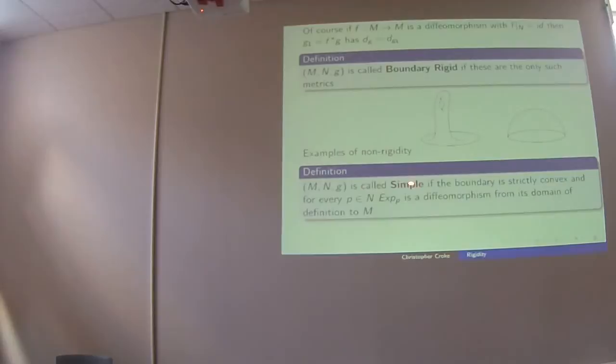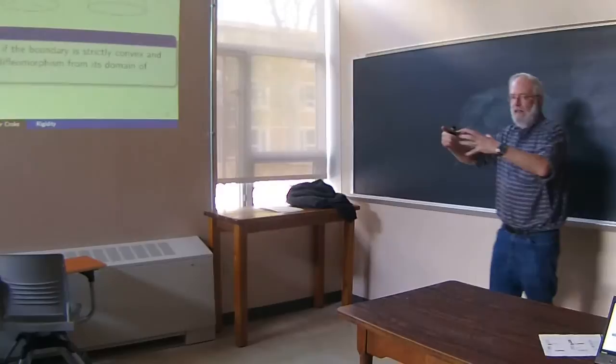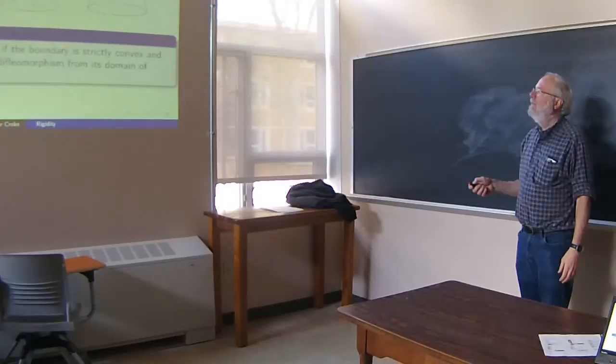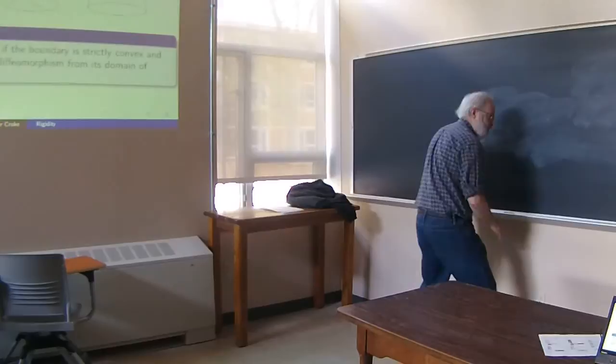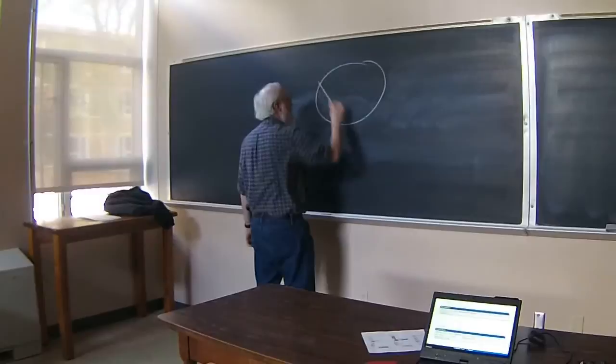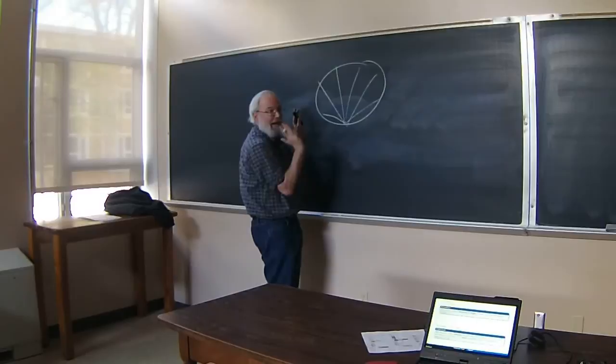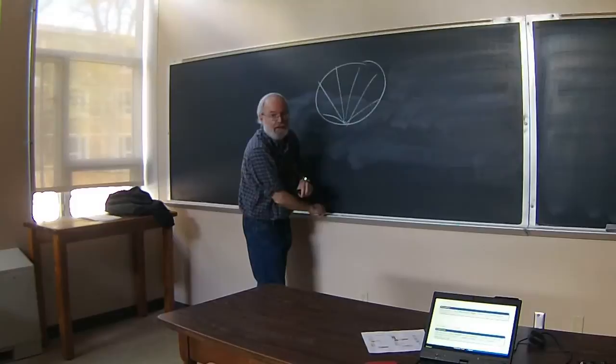The first class are the simple ones. It's simple if the boundary is strictly convex — second fundamental form has all positive eigenvalues — and for every p, the exponential map is a diffeomorphism from its domain. The exponential map is shooting out geodesics from the boundary, and that map gives a diffeomorphism: everybody's one-to-one all the way to the end. Simple, first of all, means you're a topological ball — convex boundaries and all geodesics are minimizing all the way across.